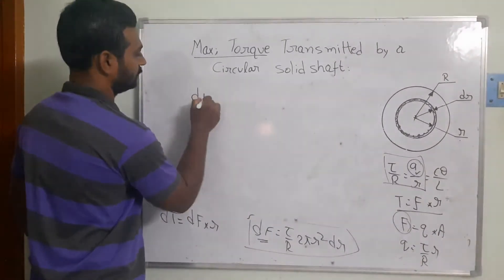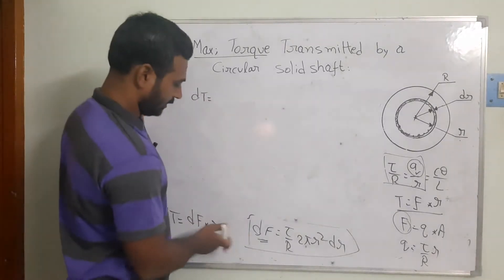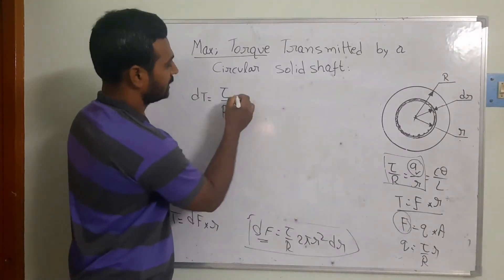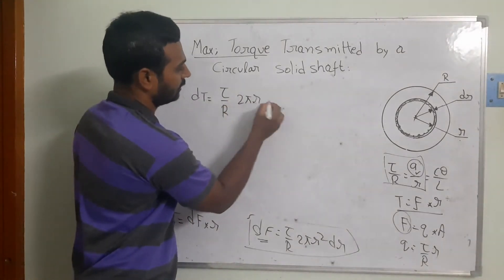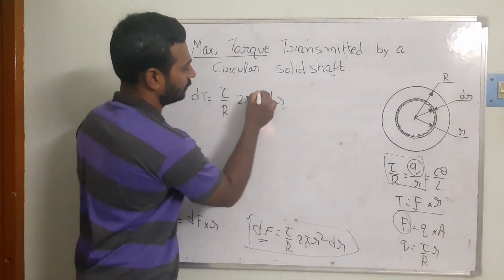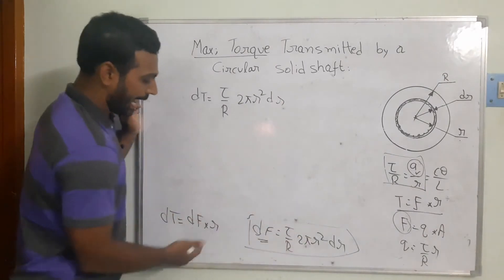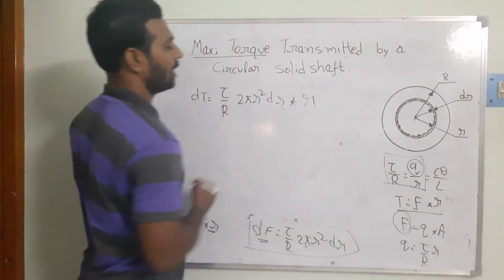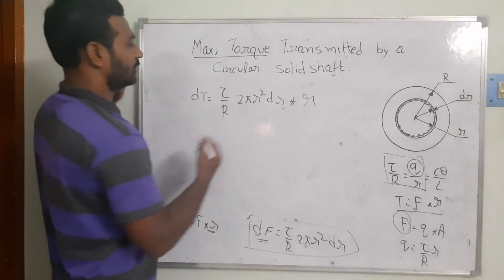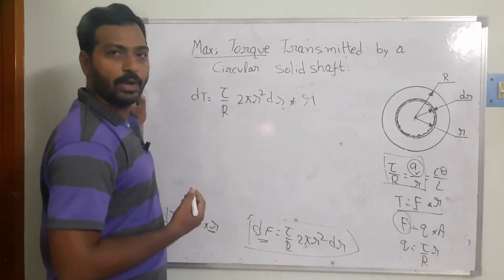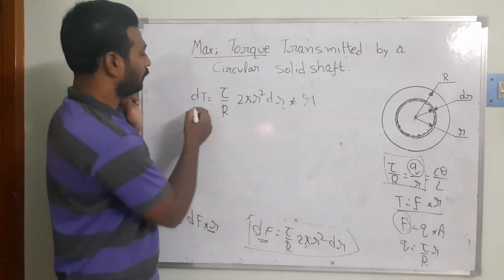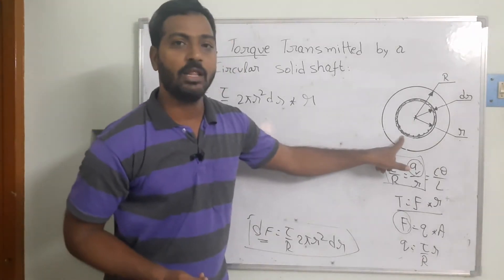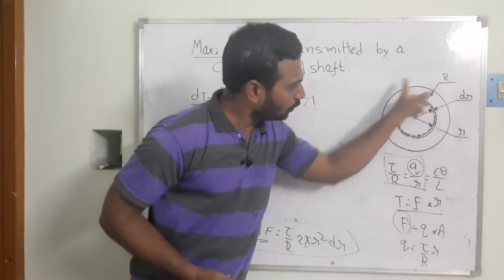Substituting df, we get dT equals (τ/R)·2π·r²·dr multiplied by r. Simplifying, dT equals (τ/R)·2πr³·dr. Now for the total torque of the circular shaft we need to integrate this expression.